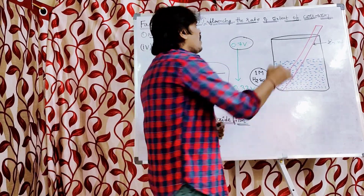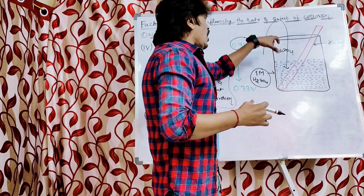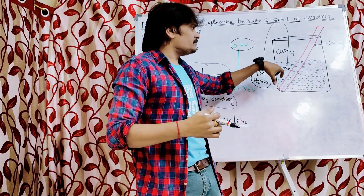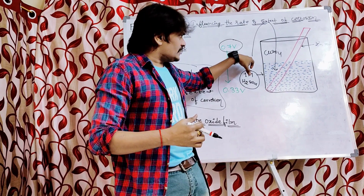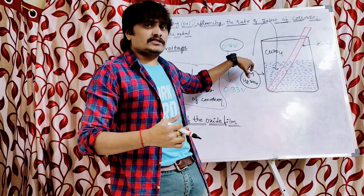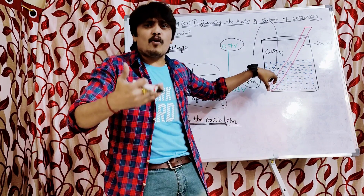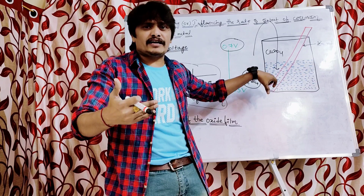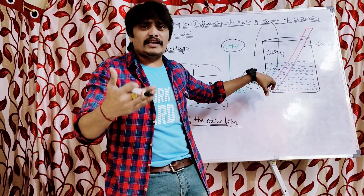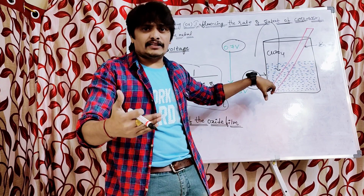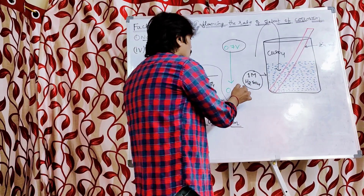Then they added copper sulfate solution to the 1 molar sulfuric acid solution. When they added the copper sulfate solution, a new condition was developed. Under this new condition, they found that the over-voltage of the zinc rod was reduced from 0.7 volts to 0.33 volts.